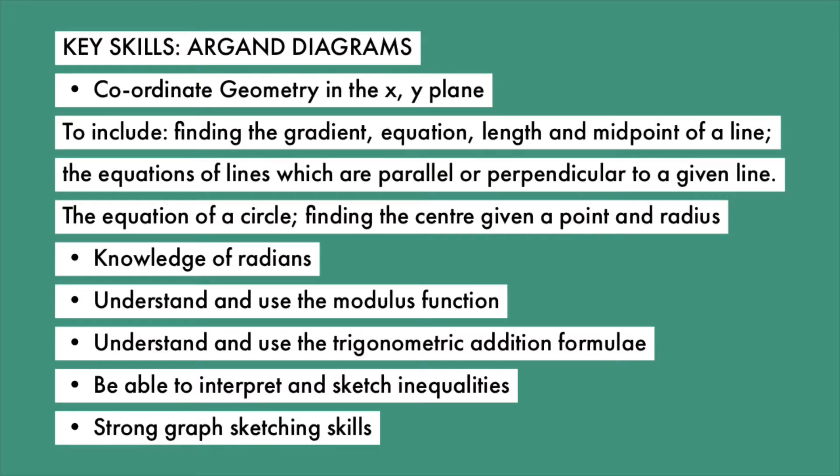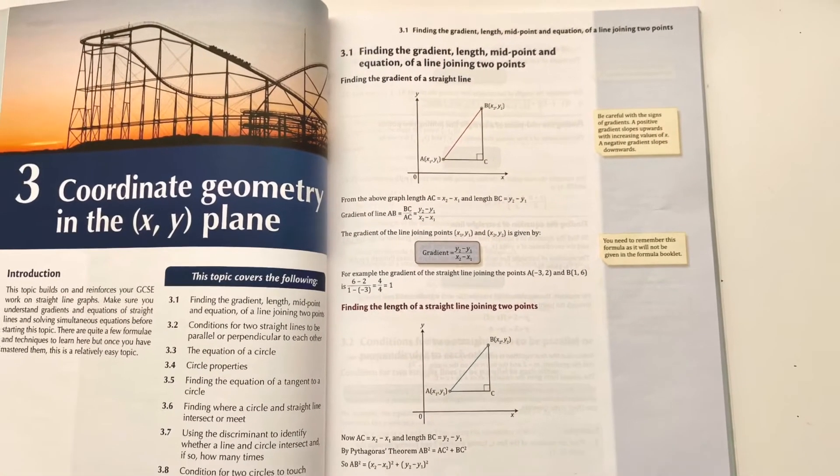Be able to interpret and sketch inequalities and have strong graph sketching skills. From my study experience, I think that this chapter will require you to have strong coordinate geometry skills from the first year of your A-level mathematics. Coordinate geometry is ubiquitous across all the exam boards in the UK. It's in the first year of your A-level mathematics study and one whole chapter in your textbook is dedicated to it. Nothing can be skimmed over because all the skills you learn in that chapter are essential, as you will need them to solve problems in the Argand diagram.